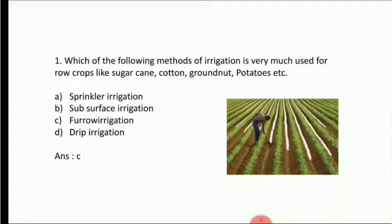The question asks which irrigation method is used for row crops like sugarcane, cotton, groundnut, potatoes. This type of irrigation is suitable for row crops. The answer is furrow irrigation.